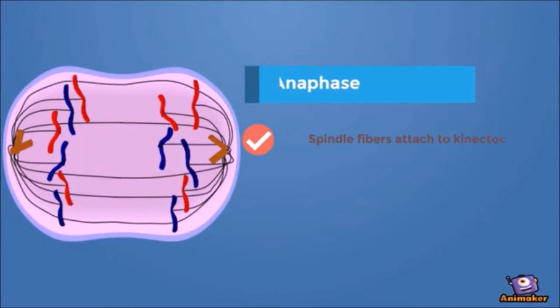The next phase is anaphase, where spindle fibers attach to kinetochores and pull the chromosomes to opposite ends, separating the chromatids.